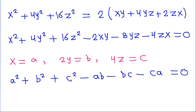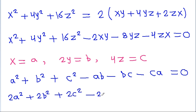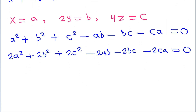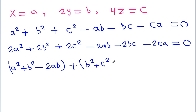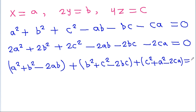Multiplying by 2, we get 2a² + 2b² + 2c² − 2ab − 2bc − 2ca = 0, which can be rewritten as (a² − 2ab + b²) + (b² − 2bc + c²) + (c² − 2ca + a²) = 0.